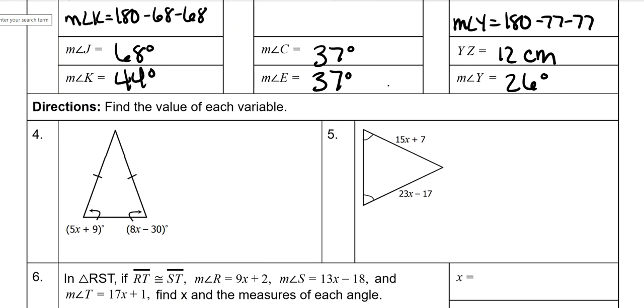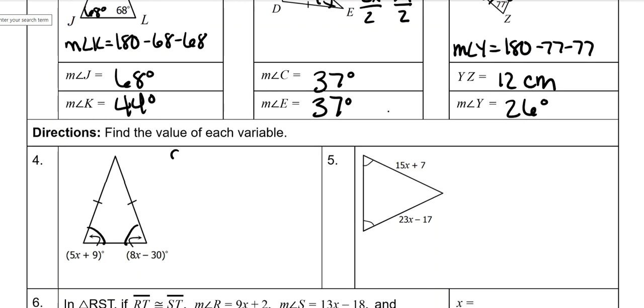So now we're going to use some algebra. Remember that these base angles of an isosceles are congruent. So to solve, you set these equal to each other. On all isosceles and equilateral triangles, you will end up setting them equal to each other. It just depends what you set equal to each other.